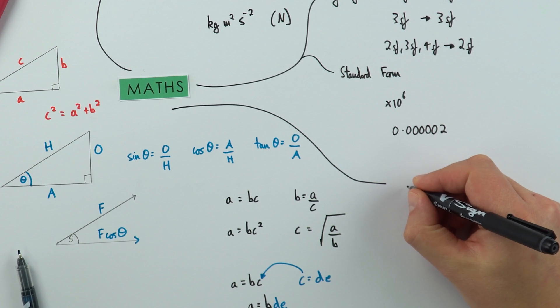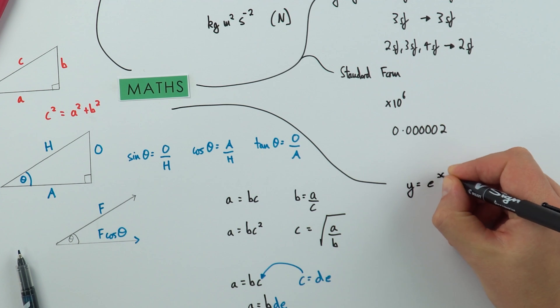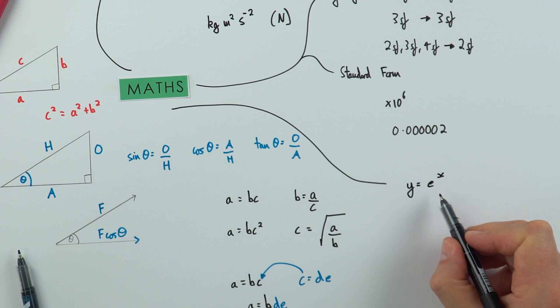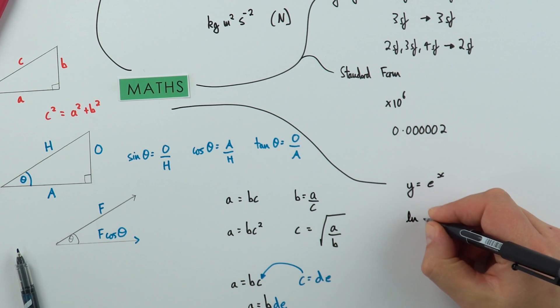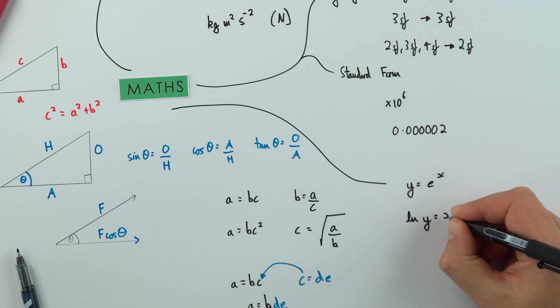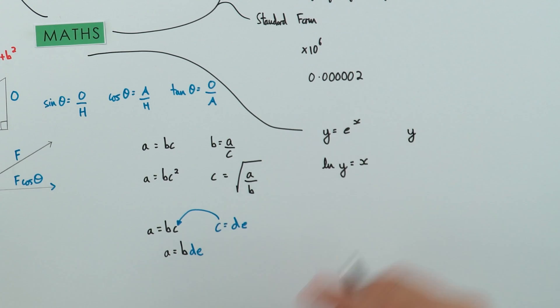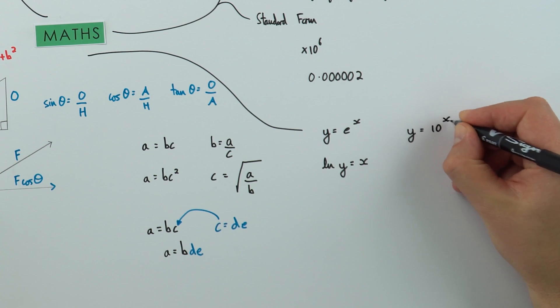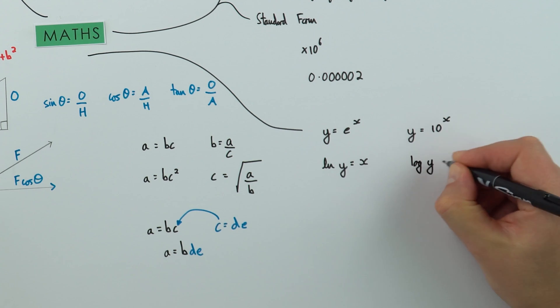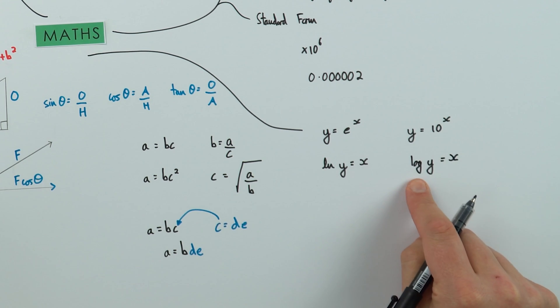Now what we mean there is we could say that Y is equal to E to the X. So this is an exponential function. And what we can do is take the natural log of both sides, say that the natural log of Y is equal to X. That might be very new if you've just come from GCSE. The other thing we might have is we might have log to the base 10. So we could say that Y is equal to 10 to the X. And what we could then say is that log Y is equal to X. So this is log, in this case, to the base 10, which is what we tend to use in physics, or we have the natural log.